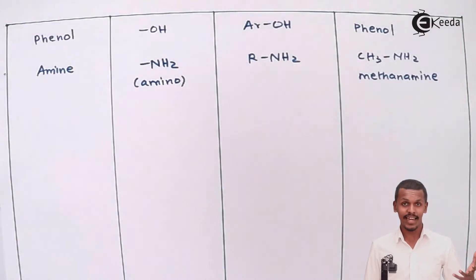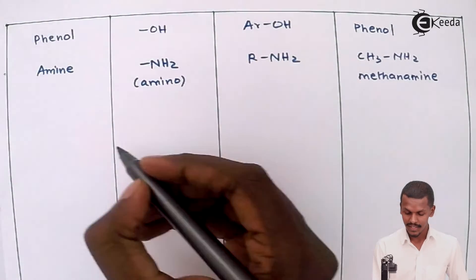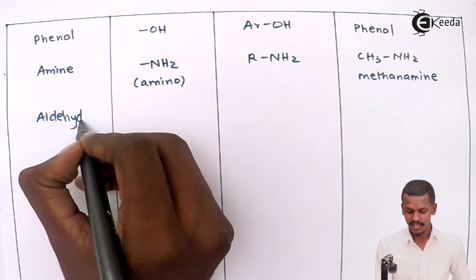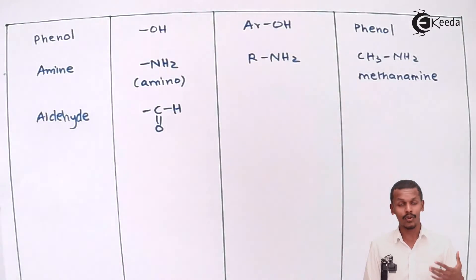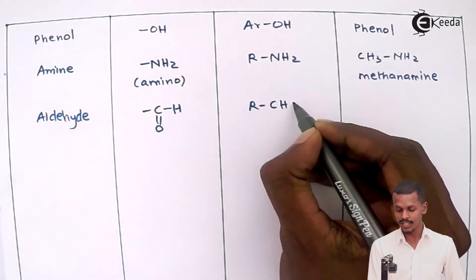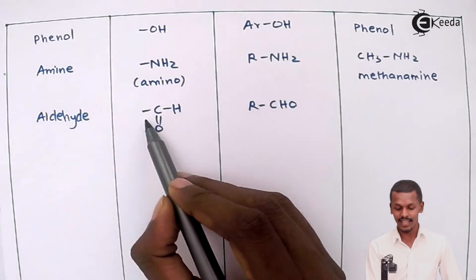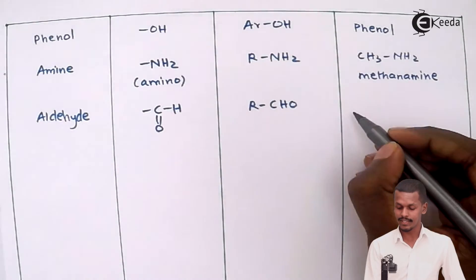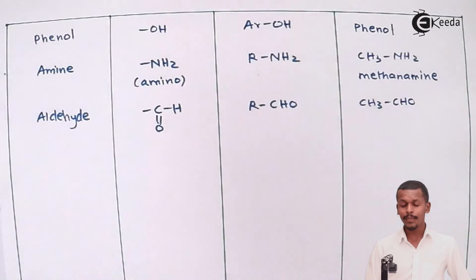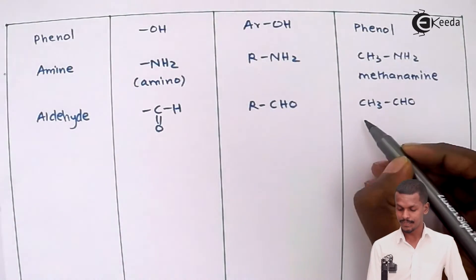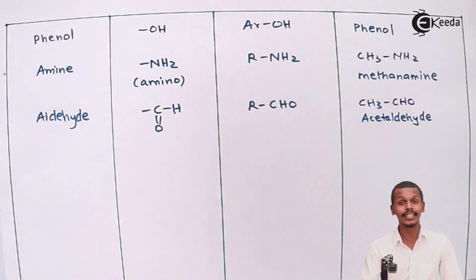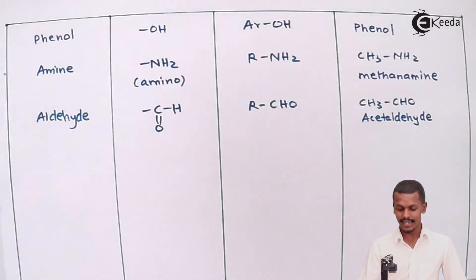The next class is aldehydes. Aldehydes are known by their functional group, the aldehyde (or formyl) group, written as –CHO (R–CHO or R–C(=O)–H). An example is CH3CHO, which consists of two carbon atoms. Its IUPAC name is ethanal, while its common name is acetaldehyde.